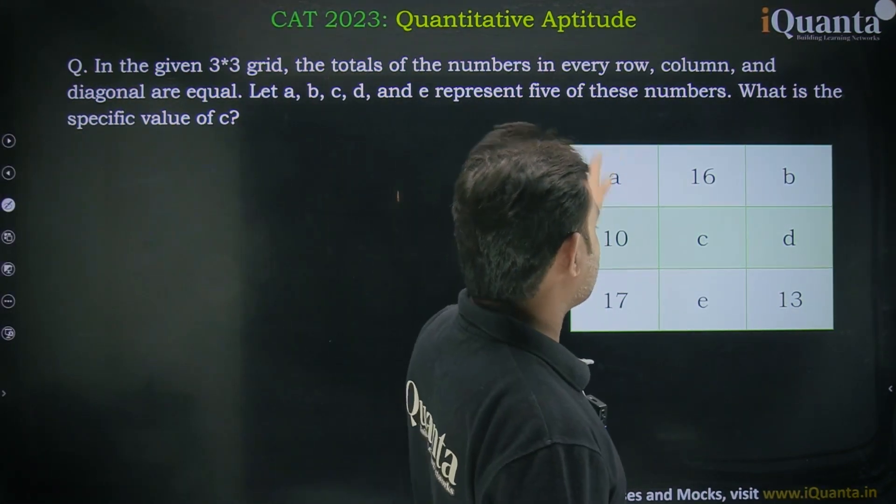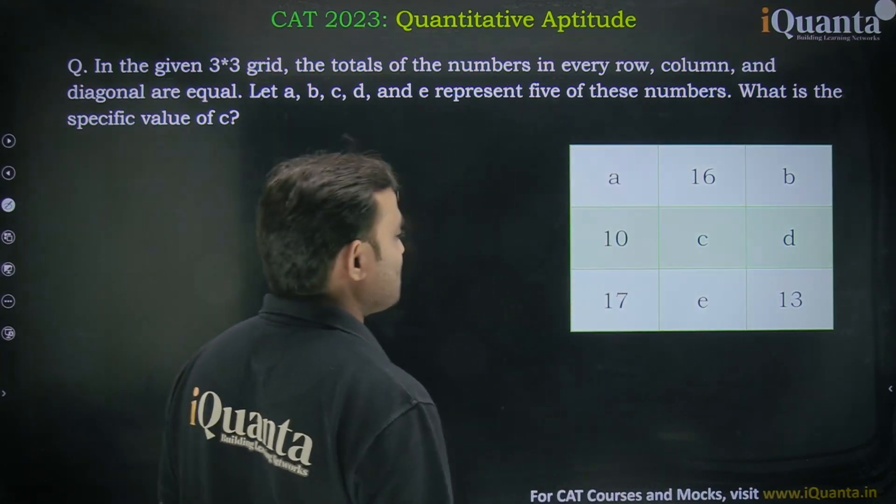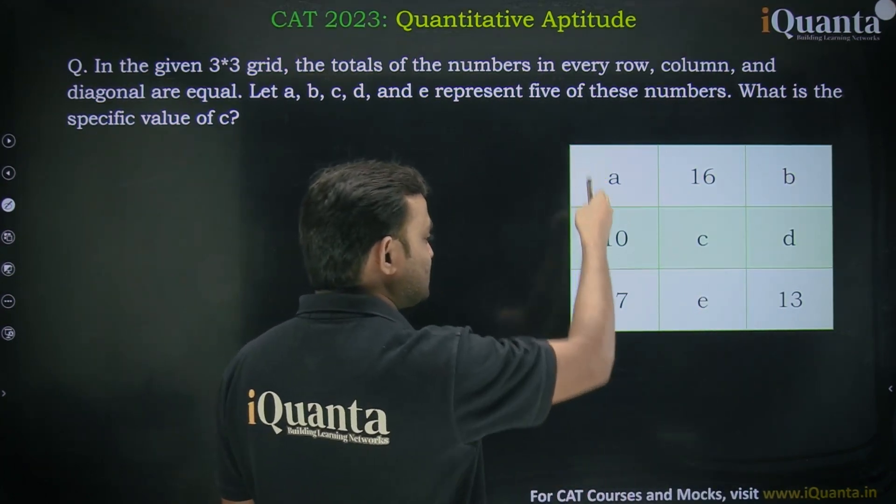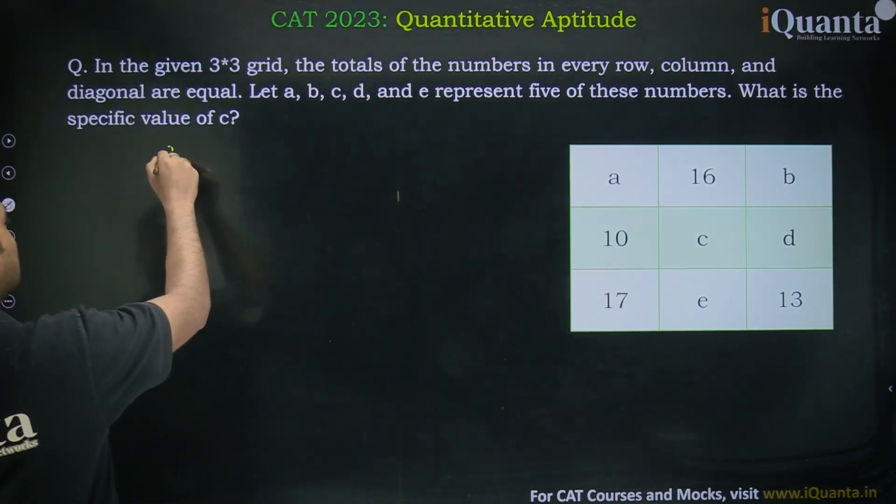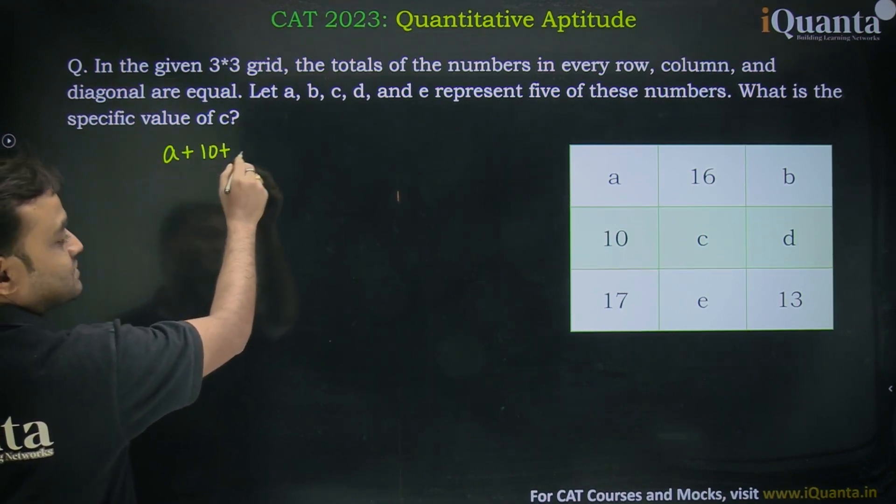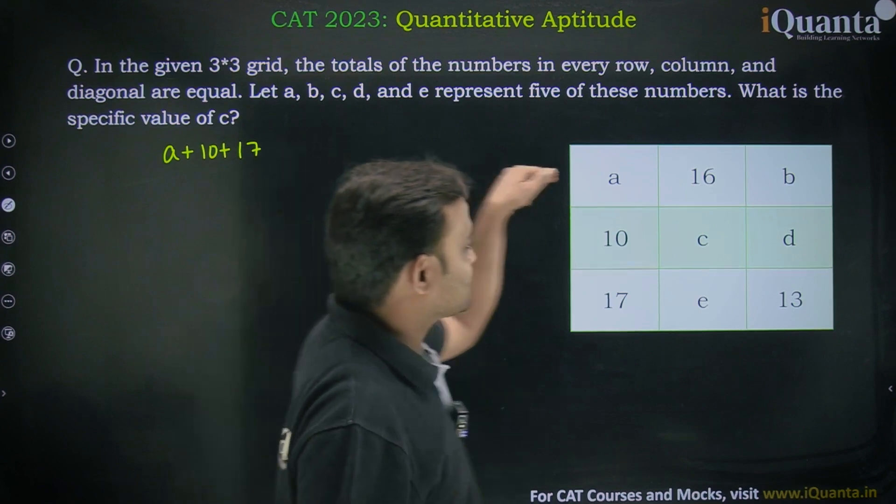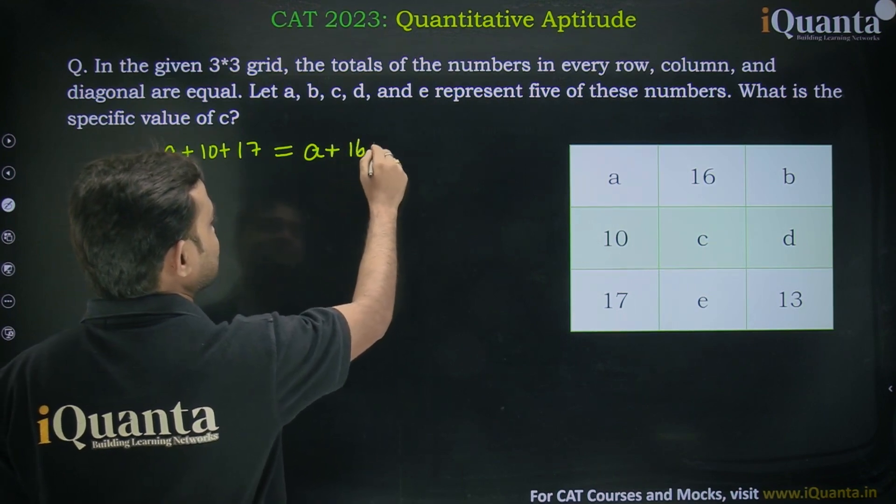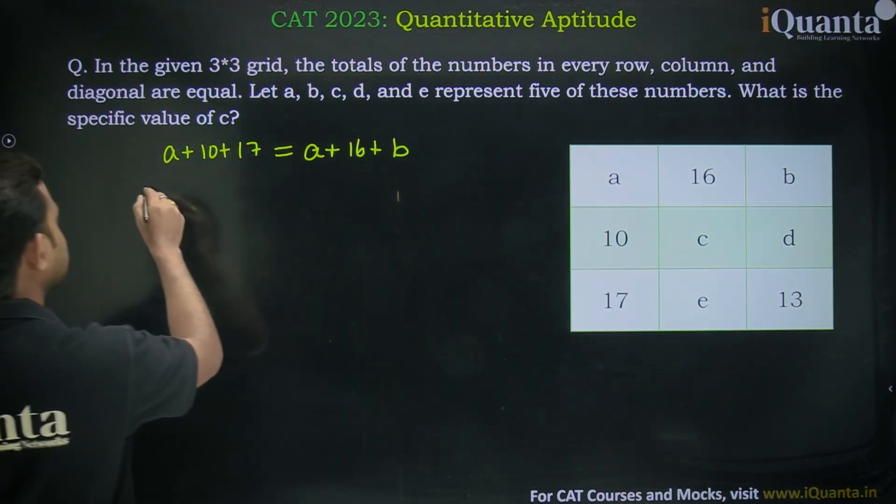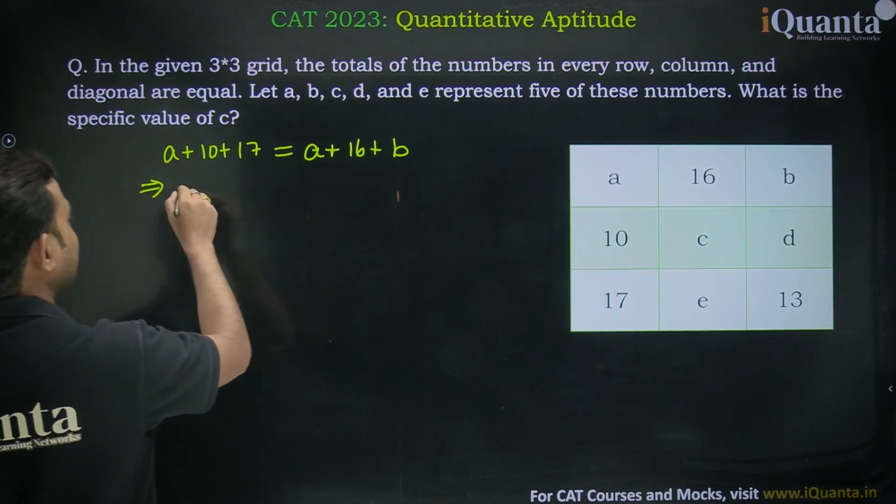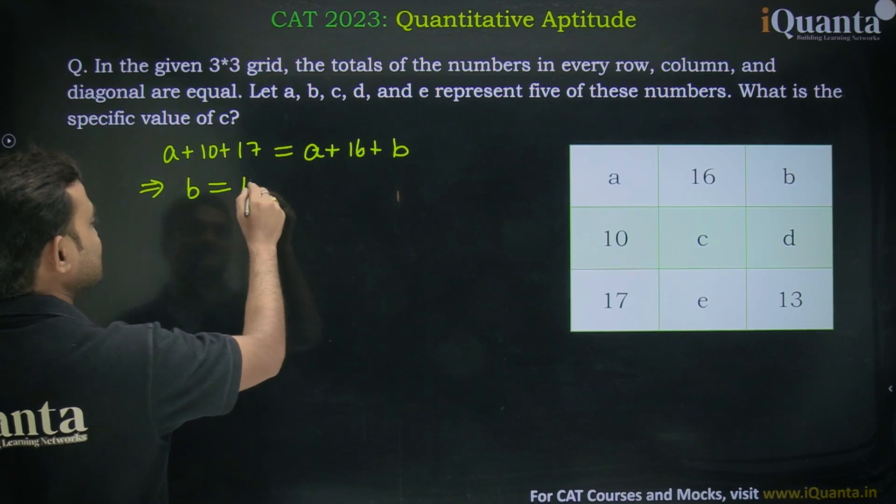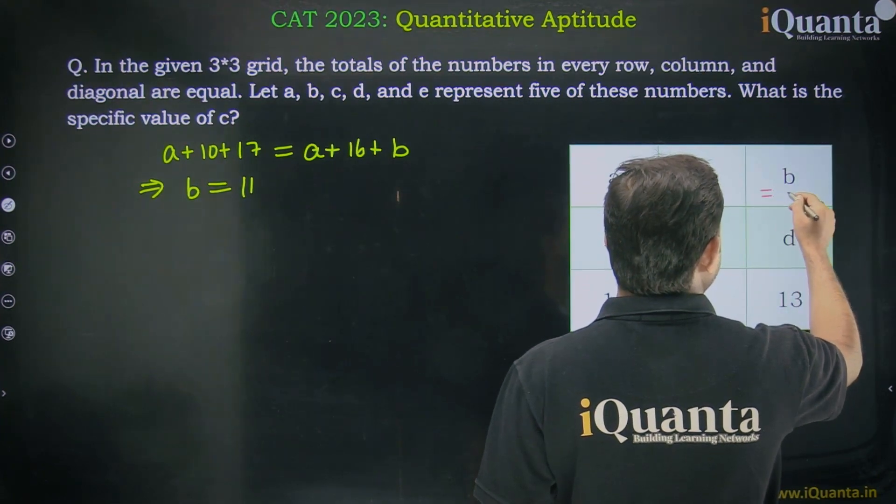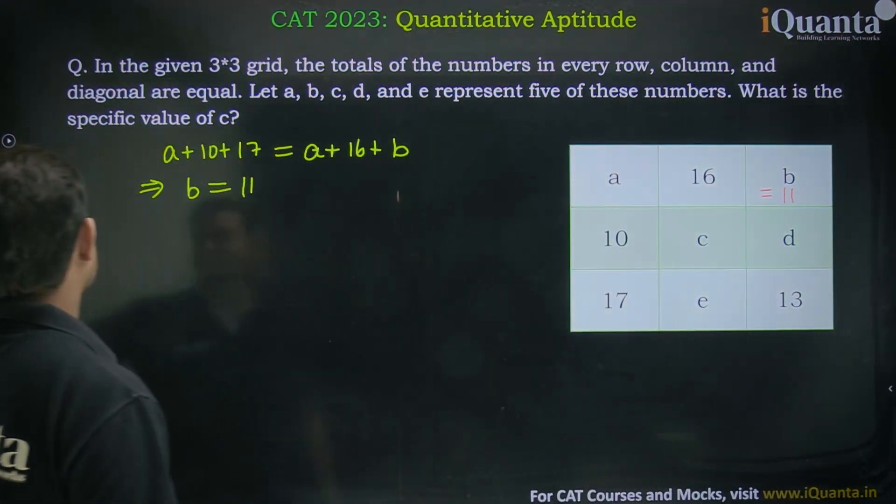We know that sum of all the rows and columns are equal, so we can start with the first column and first row. Sum of all the numbers in first column is a + 10 + 17, and sum in the first row is a + 16 + b. From here, a cancels out and b = 27 - 16 = 11. So b = 11.